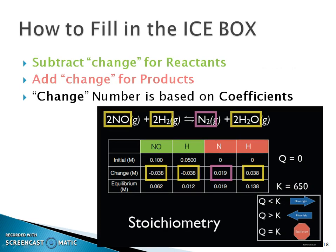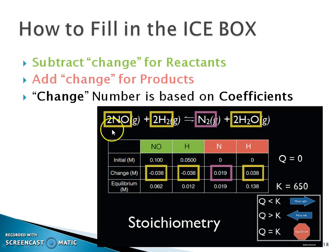How do we fill in this ICE box? We're going to talk about this in more detail later. For reactants, we subtract the change, keeping in mind the coefficients of the balanced equation. For products, we add the change, again keeping in mind those coefficients. Stoichiometry is going to be really important in these ICE boxes.